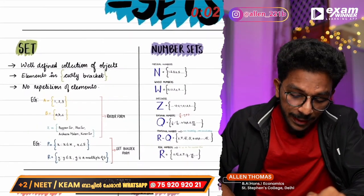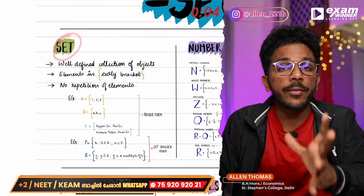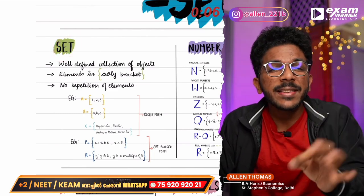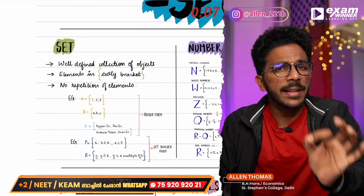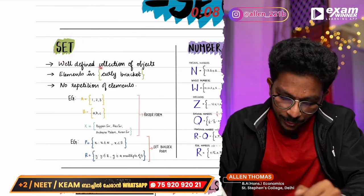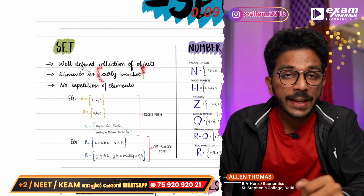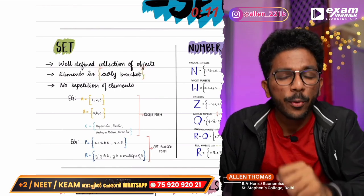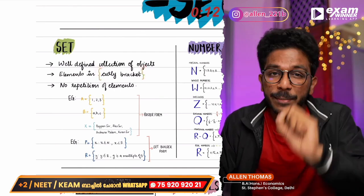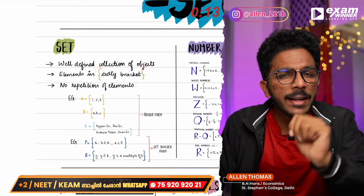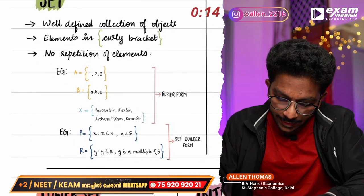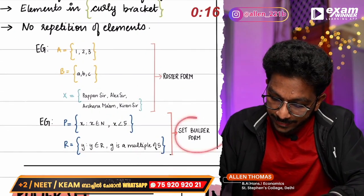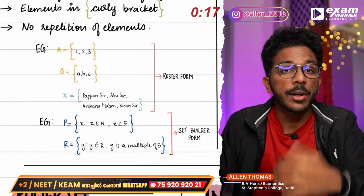If you want to know, we have to update the definition. A set has all the elements in curly brackets. The two types are roster form and set builder form.